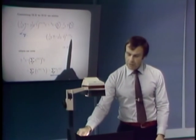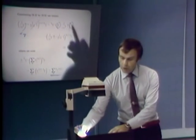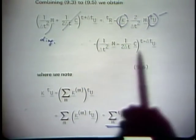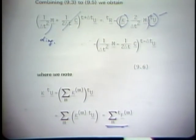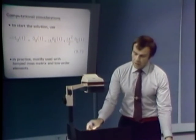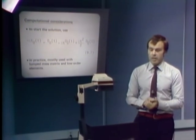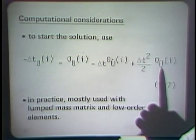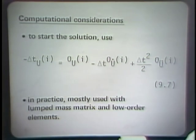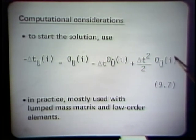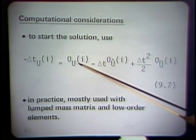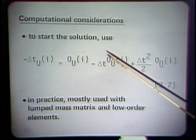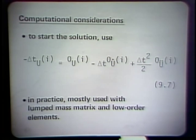The central difference method is mostly used with a lumped (diagonal) mass matrix. When starting the integration, we know the initial conditions T_u, but we do not directly know the displacements at T minus delta T. These are obtained using the central difference formula applied at time T, which involves the accelerations, velocities, and displacements corresponding to time 0 — all of which must be given as initial conditions.